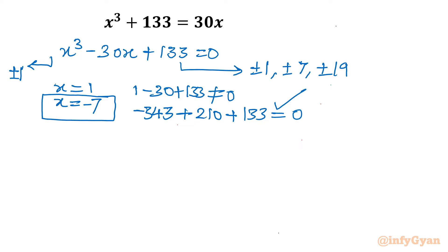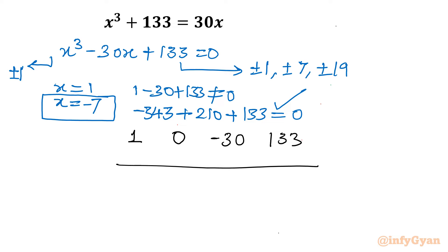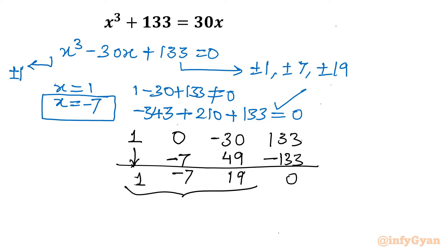Now I will use synthetic division to find the quadratic equation. Writing all coefficients: 1, 0, minus 30, then 133. The leading coefficient is 1. One times minus 7 is minus 7. Minus 7 times minus 7 is 49, giving 19 here. Then 19 times minus 7 is minus 133, so the remainder is 0. The resulting quadratic equation is x squared minus 7x plus 19 equal to 0.